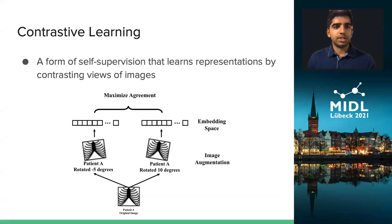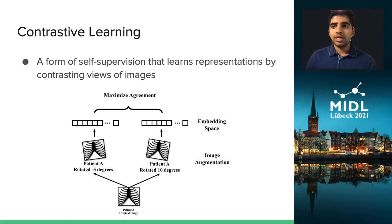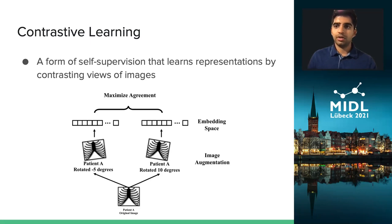We first want to discuss contrastive learning, which is a form of self-supervision that learns representations by contrasting views of images. Essentially the pretext task here is to maximize agreement between different views or augmentations of the same image and minimize agreement between this image and a set of negative samples. Contrastive learning typically learns the best representations when we use very strong image augmentation and when our set of negative examples is very large and covers a diverse range of examples.